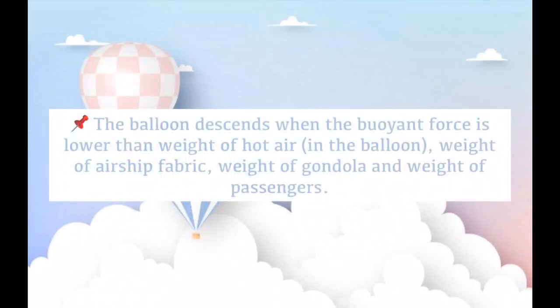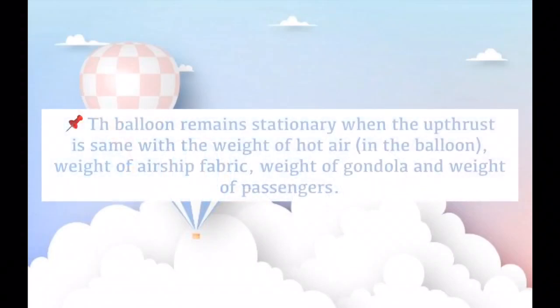The balloon descends when the buoyant force is lower than the combined weight of the hot air in the balloon, the weight of the airship fabric, the weight of the gondola, and the weight of the passengers. The balloon remains stationary when the upthrust is the same as the combined weight of the hot air in the balloon, the airship fabric, the gondola, and the passengers.